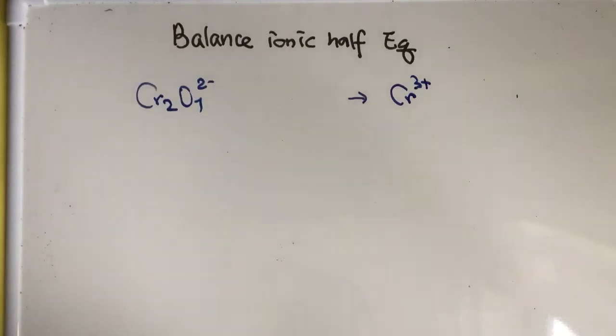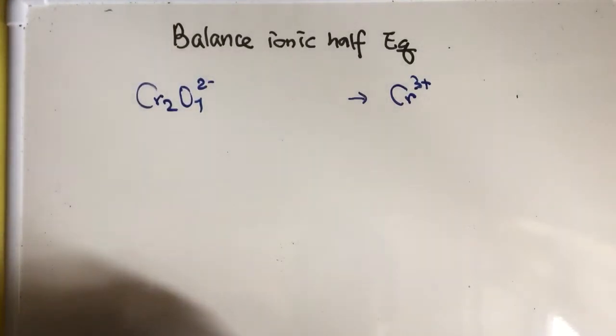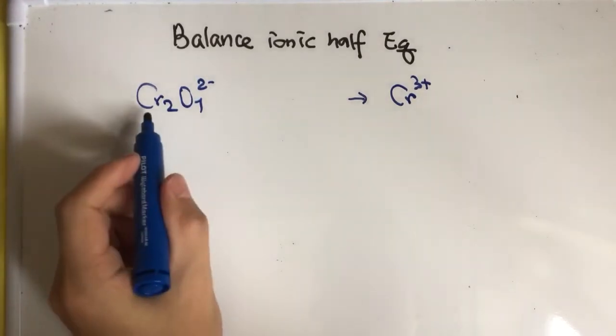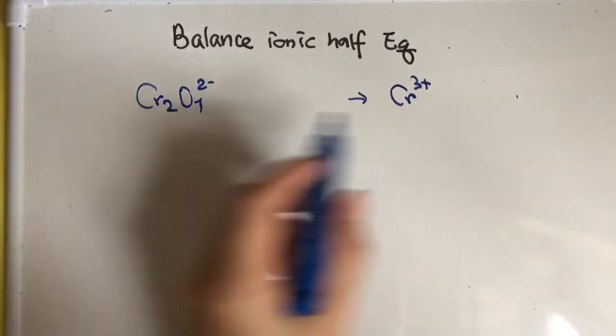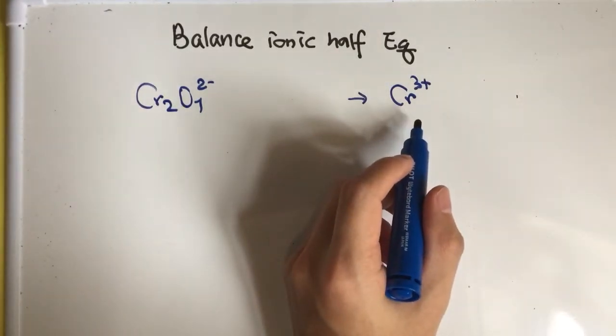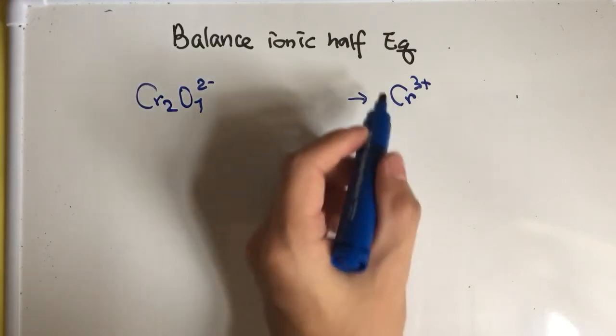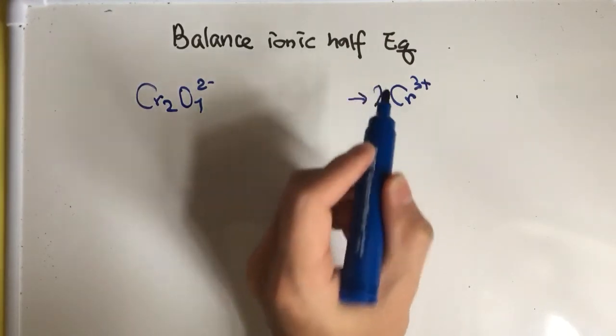When you balance the ionic half equation, you need to balance the main element first. For the main element this time, chromium, the left hand side has two chromium and the right hand side only has one. You have to balance the chromium by adding a coefficient of 2 on the product side.